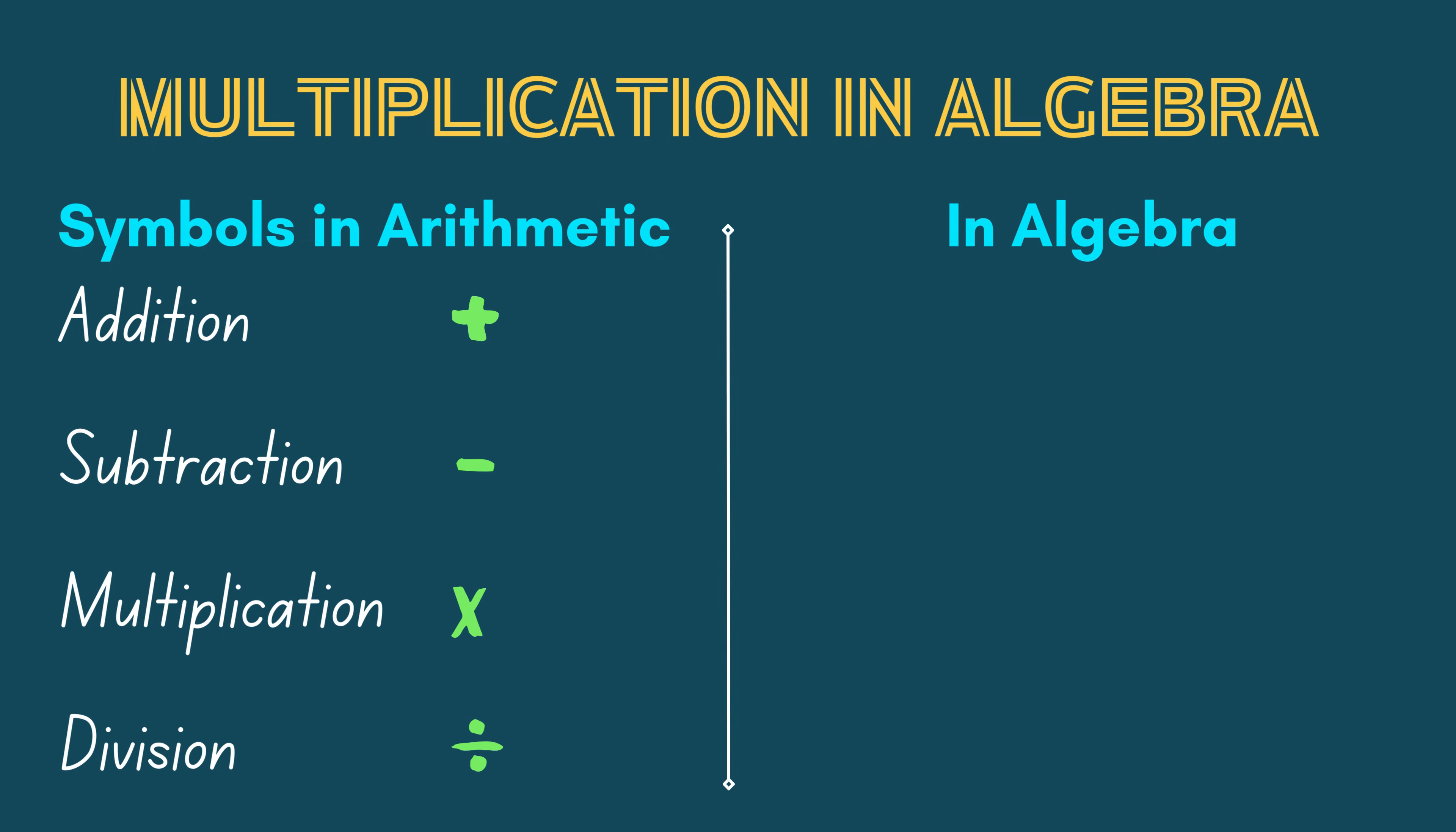In algebra, multiplication is the default operation, meaning that instead of writing A times B, you can leave out the times symbol and just write AB.